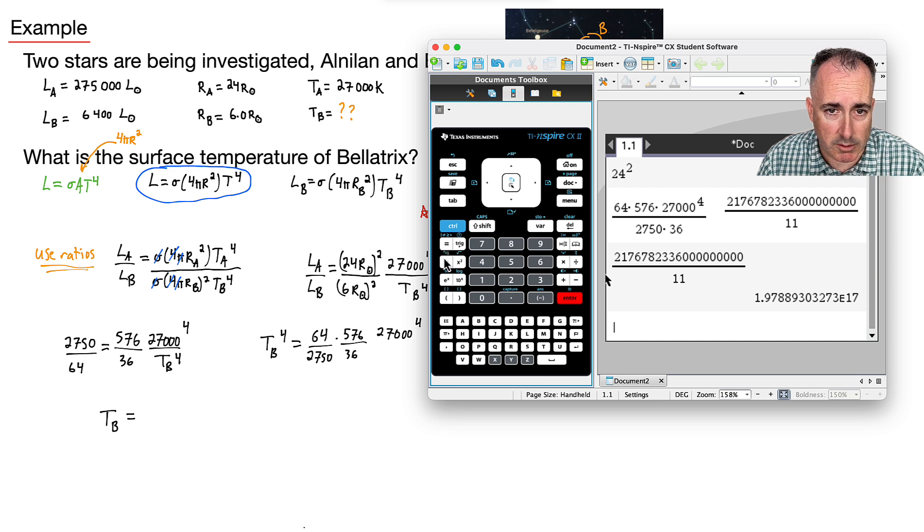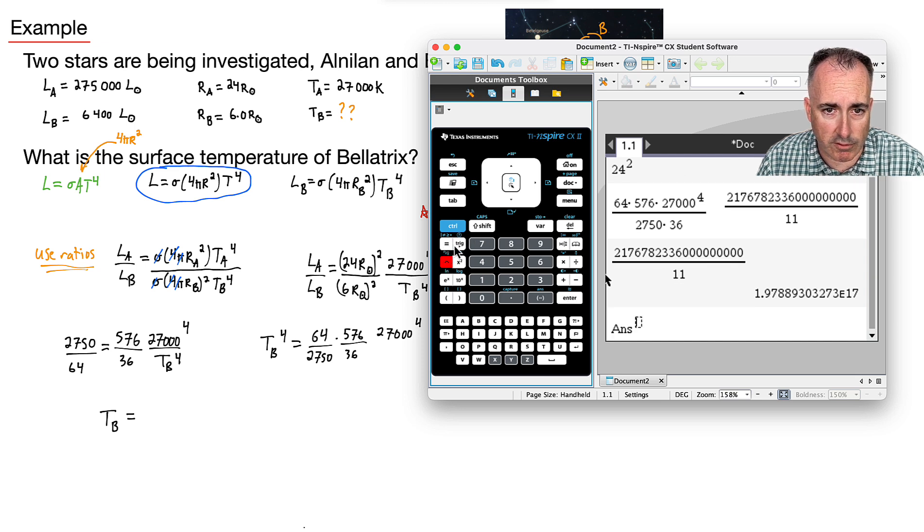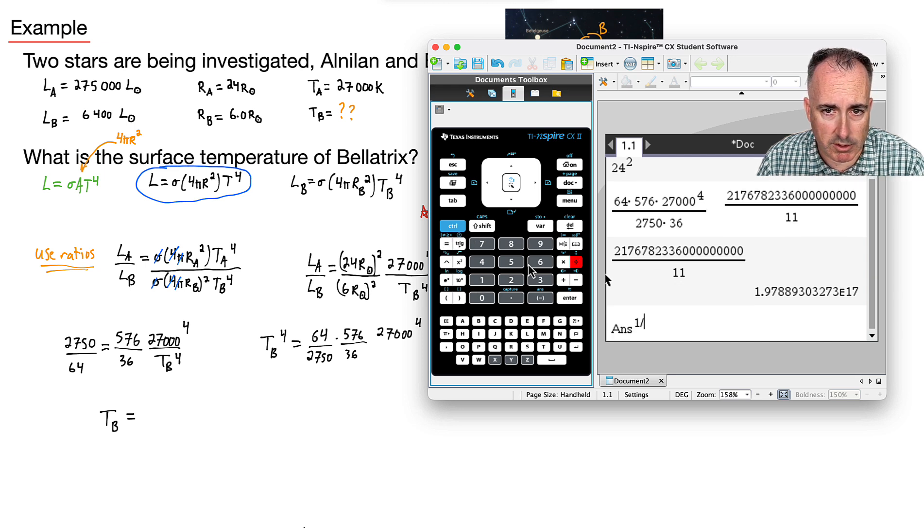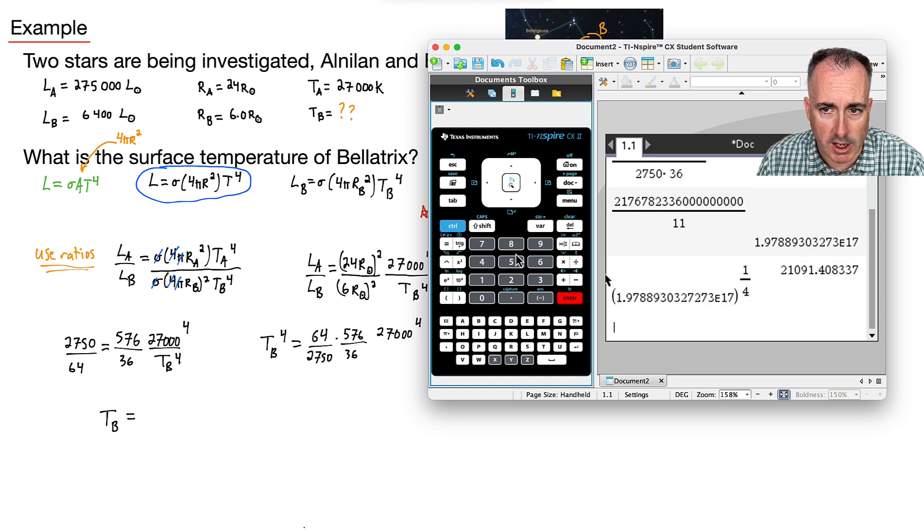And remember that this is what T to the fourth is. So how do I get rid of that? Remember, I do the answer to the power of one over four. So that's how I would do it here. So I get one over four. And I end up with, oh man, yeah, something like this.